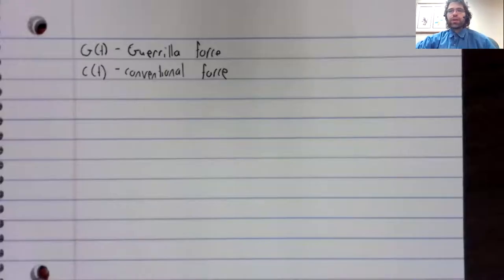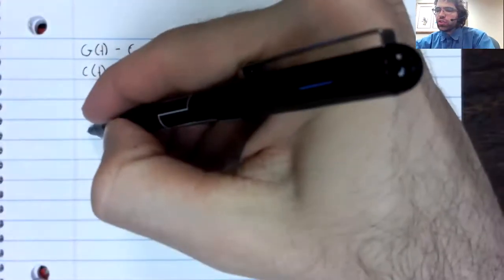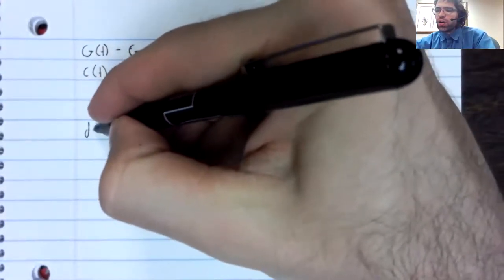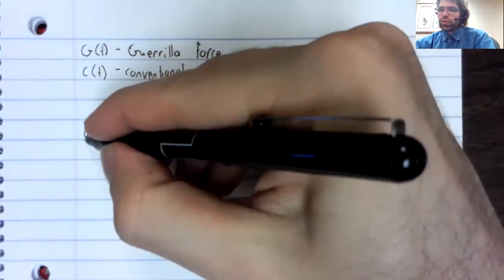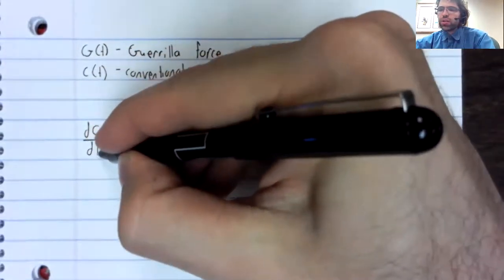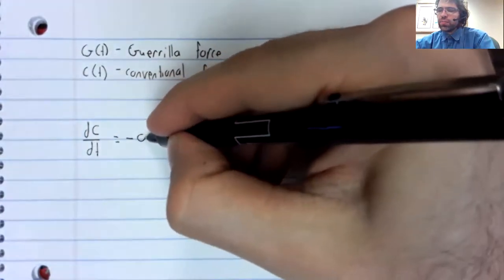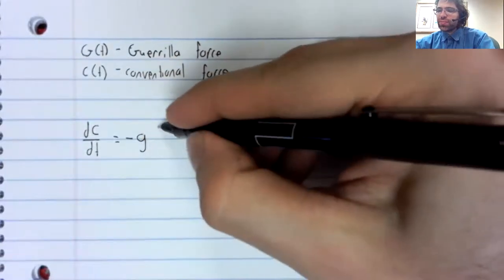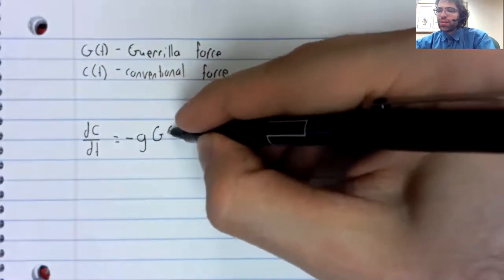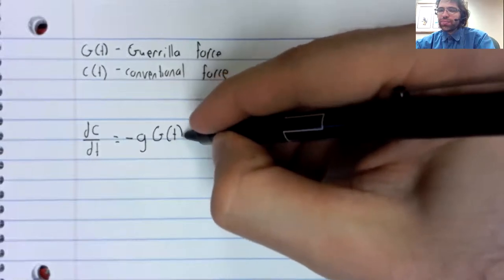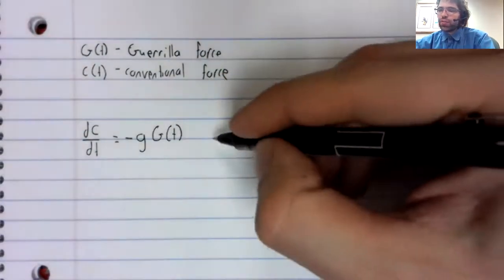We will name our variables appropriately, and one of our differential equations will be unchanged. How the conventional force changes with time depends on the equippedness and size of the guerrilla force, plus a reinforcement term.